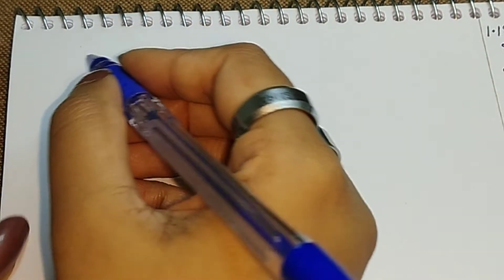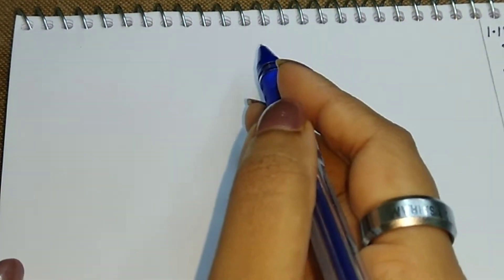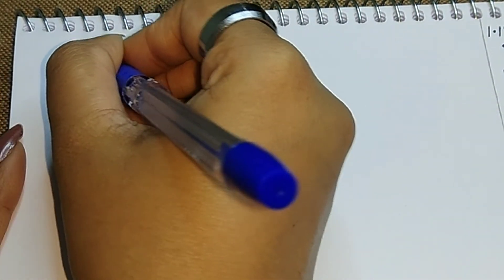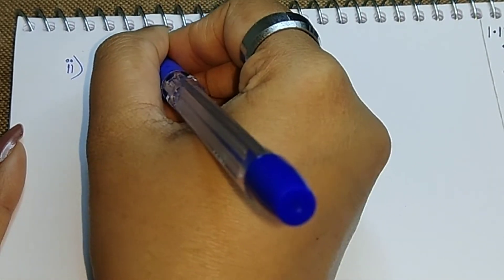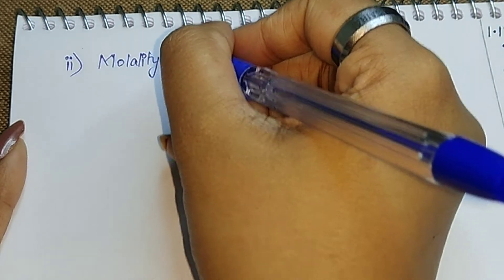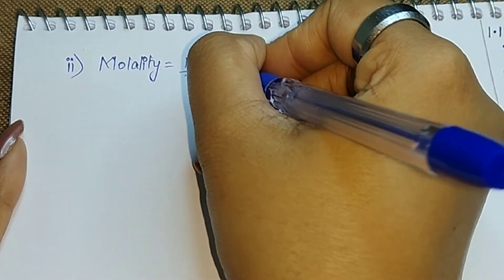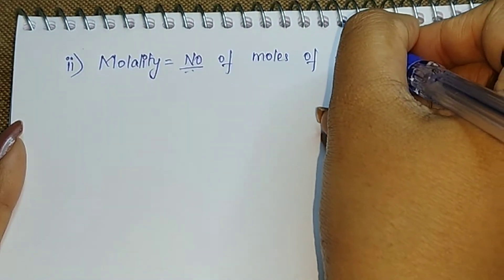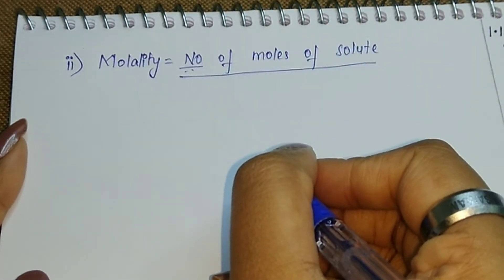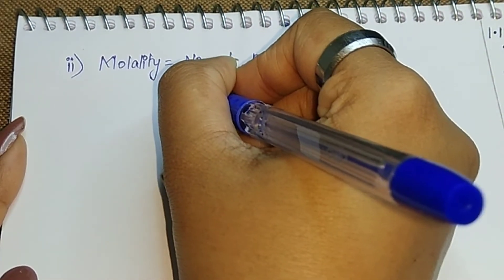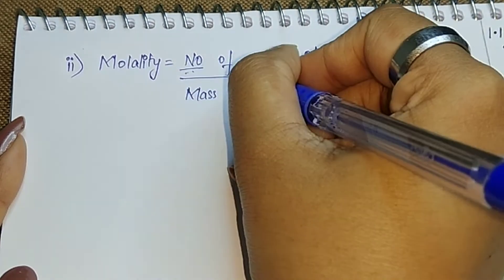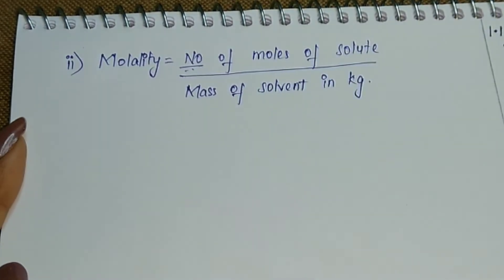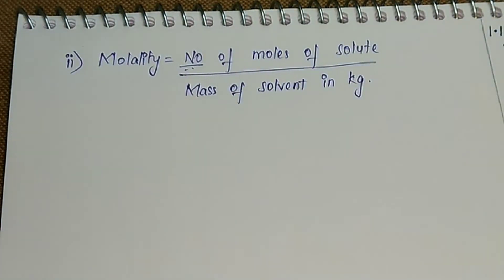For the second part, we need to find molality. The formula for molality equals the number of moles of solute divided by the mass of solvent in kilograms.